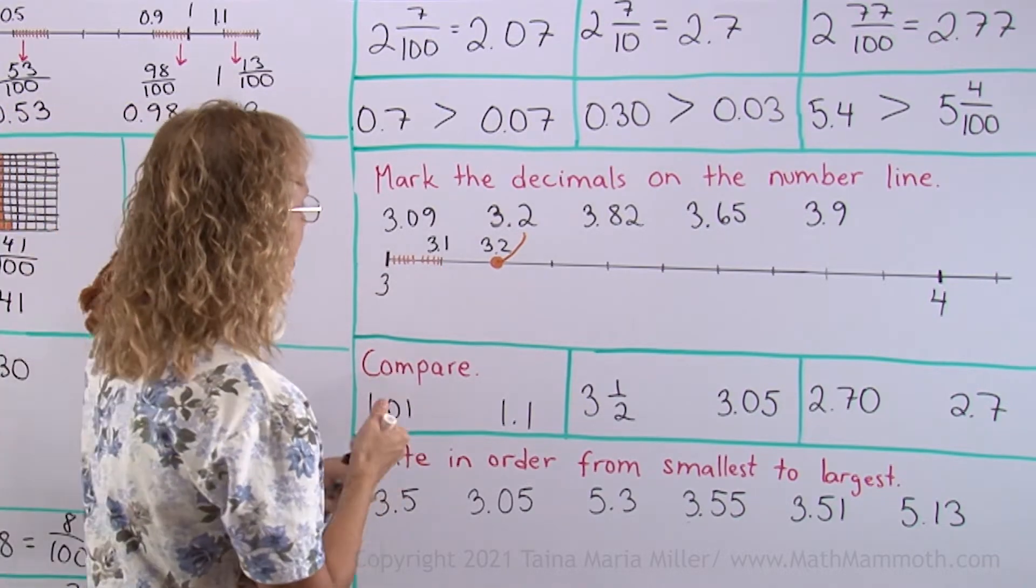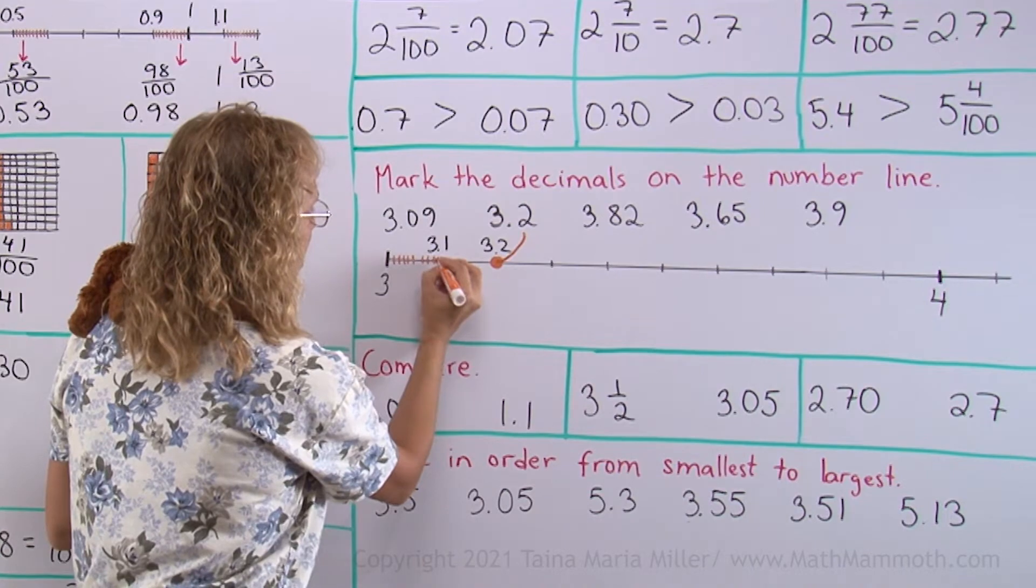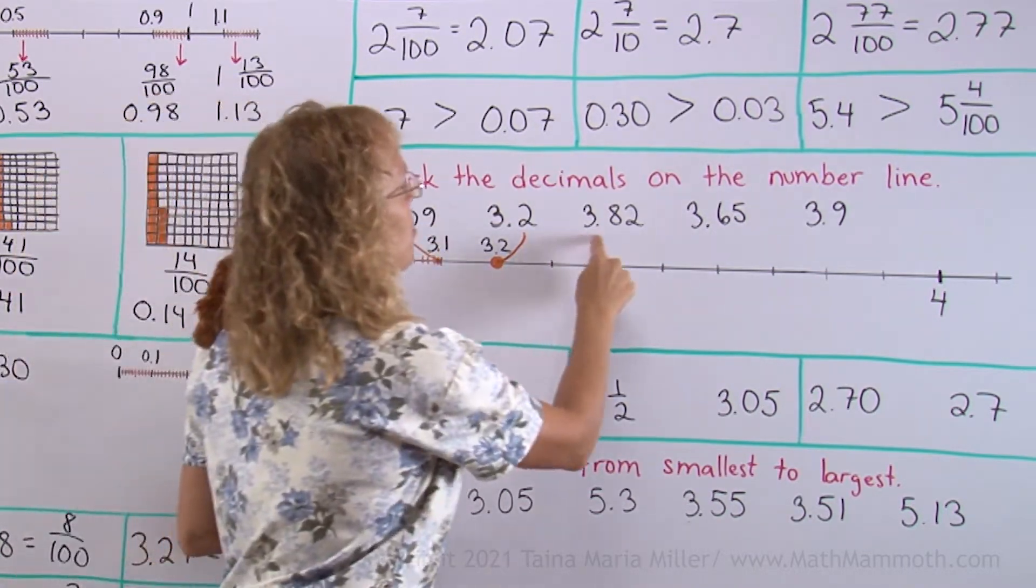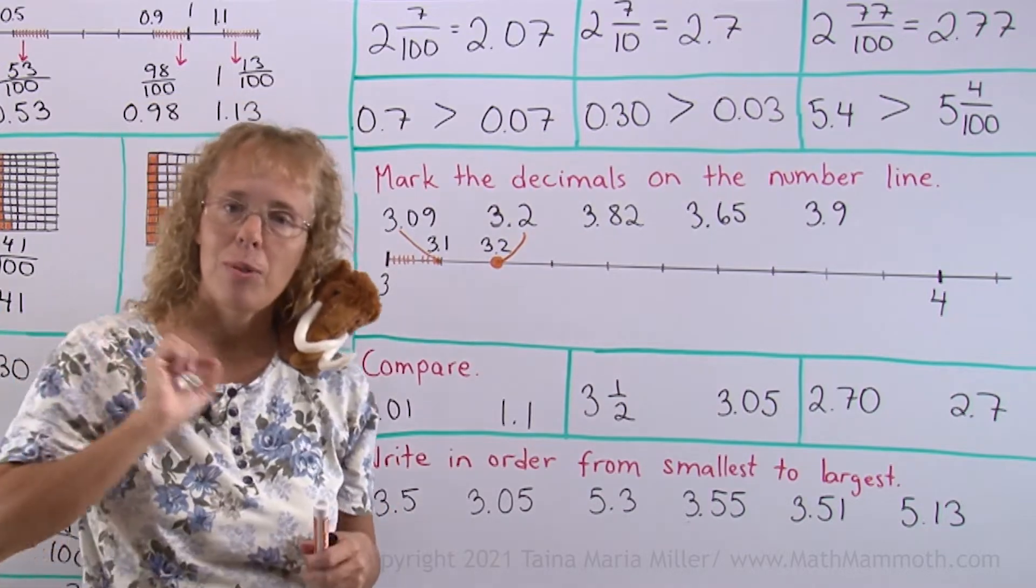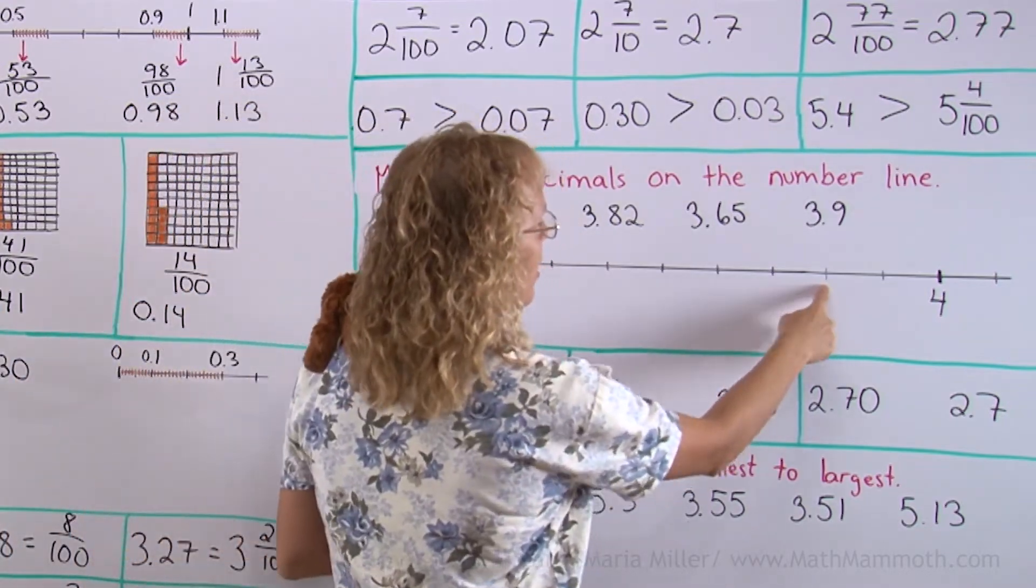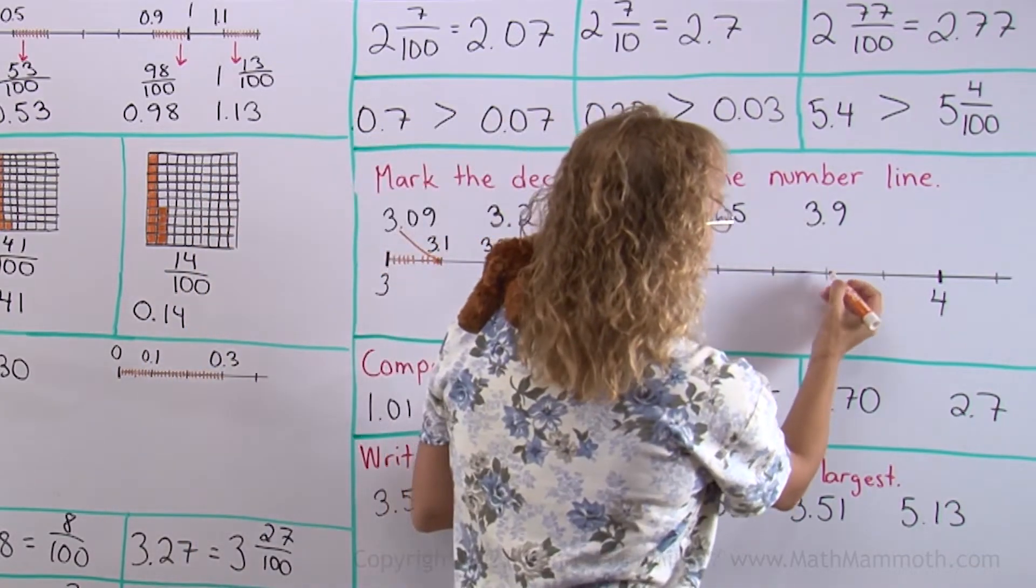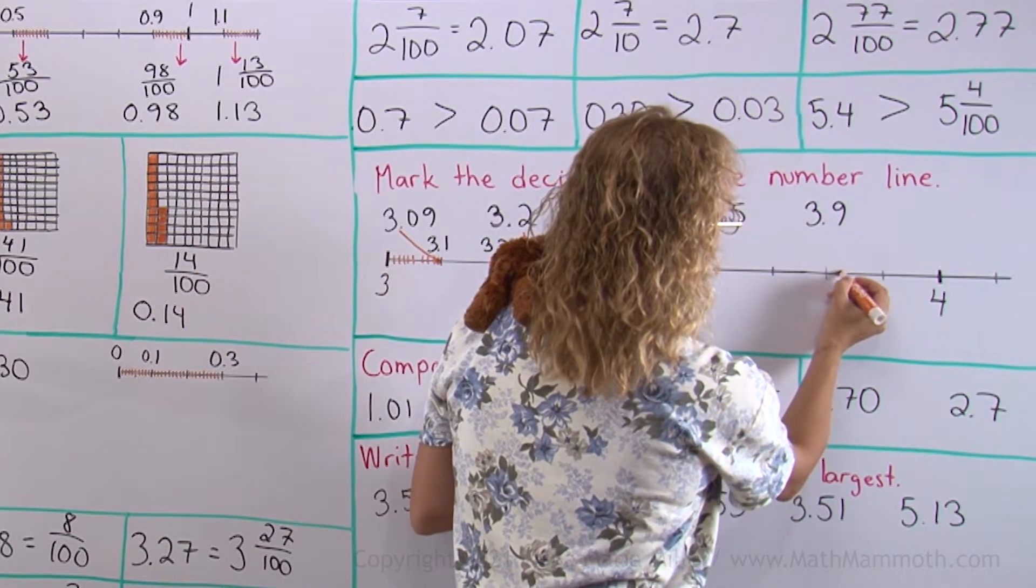The tick marks just before 3.1. Over here is 3.09. 3.82. I will first go to 3.8 or 3 and 8 tenths over here. And then 2 hundredths beyond that. So two little thingies beyond that. Somewhere there.